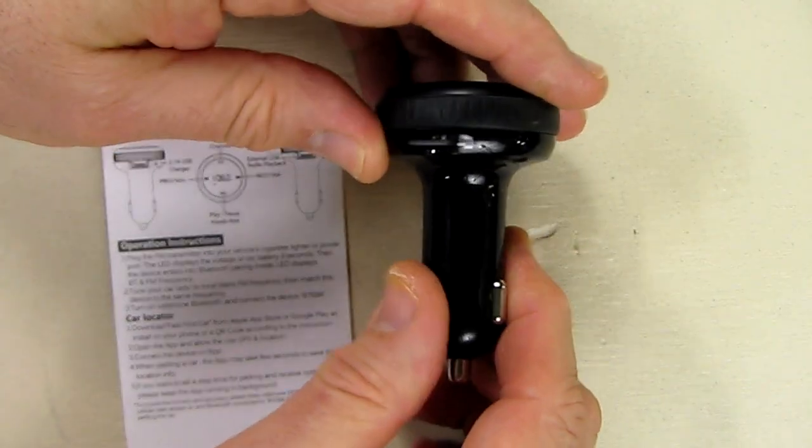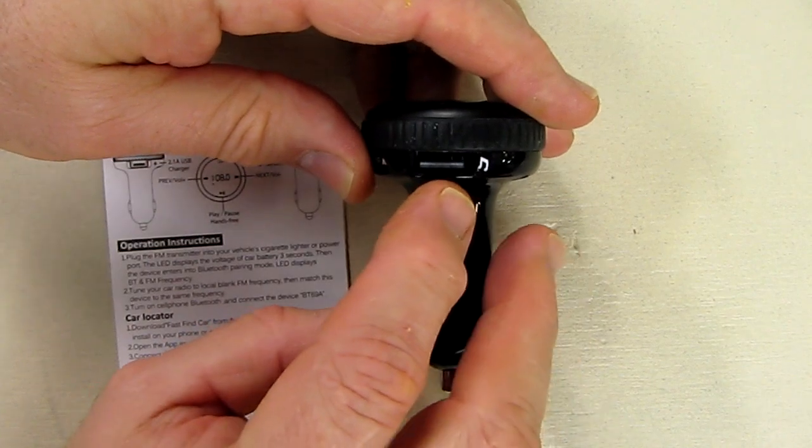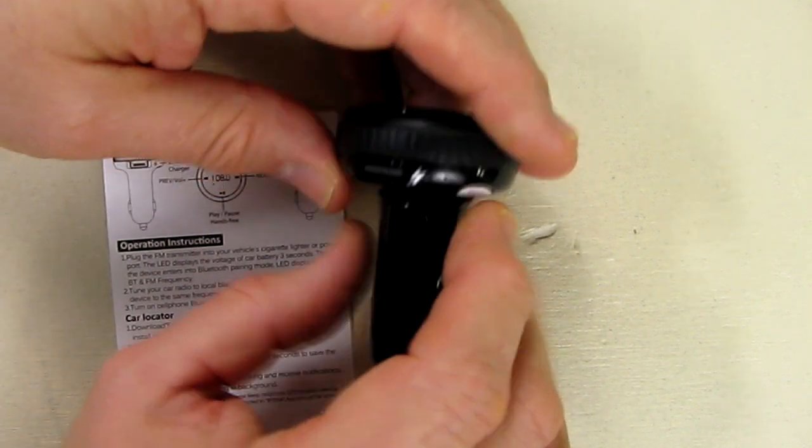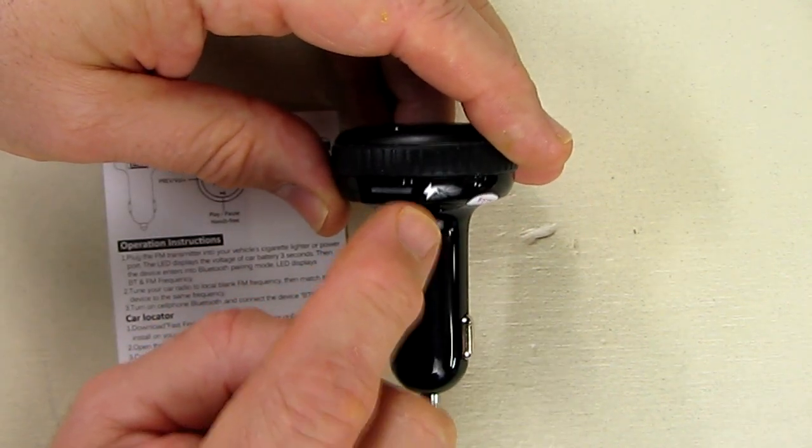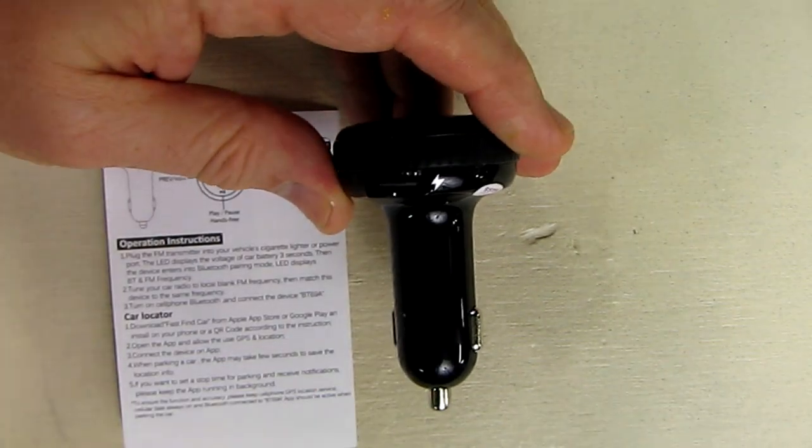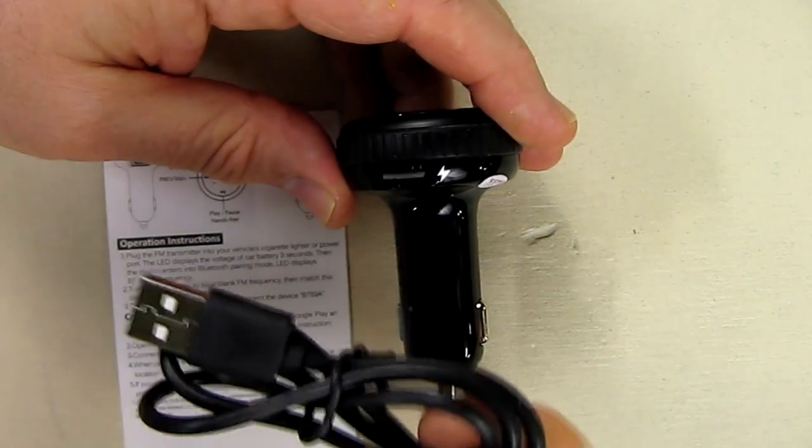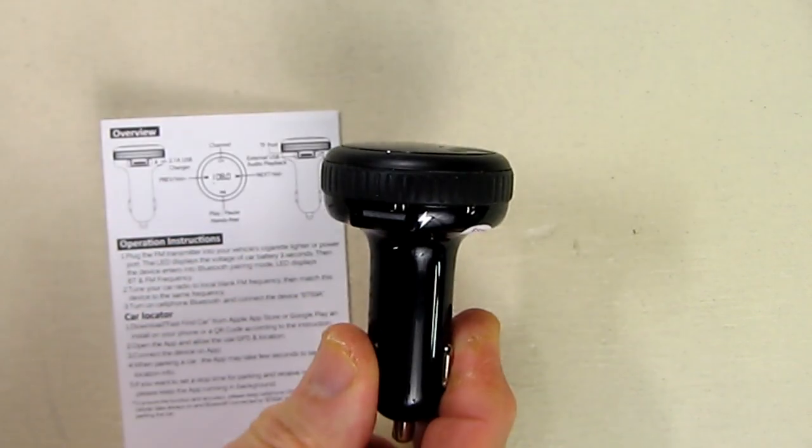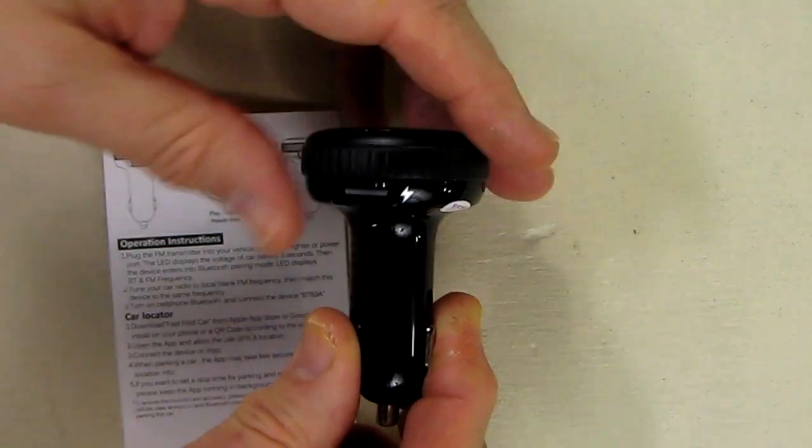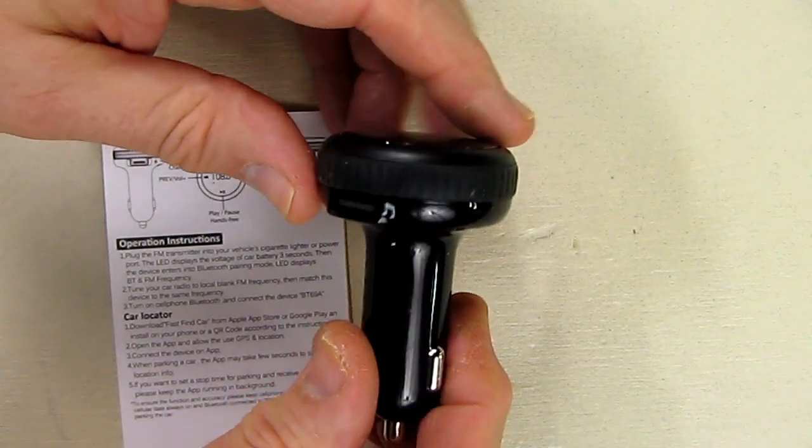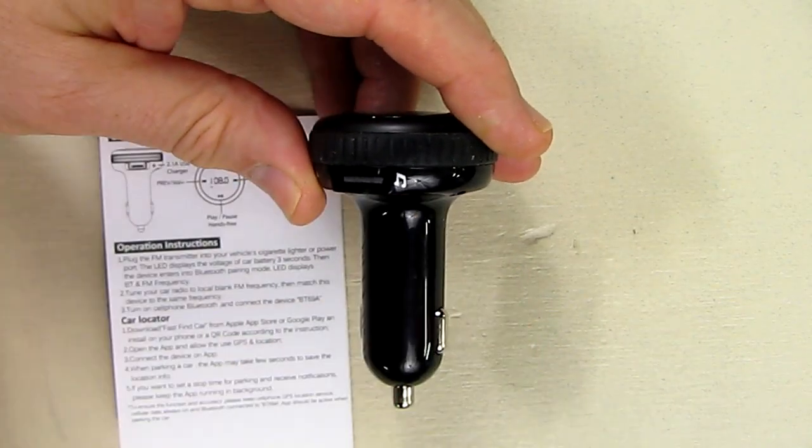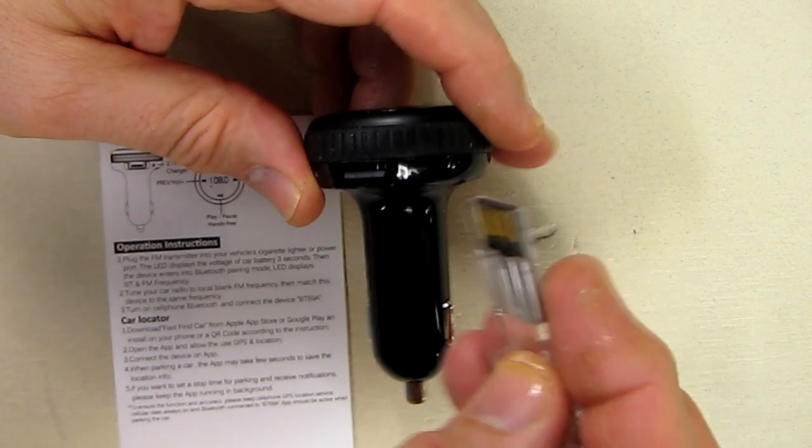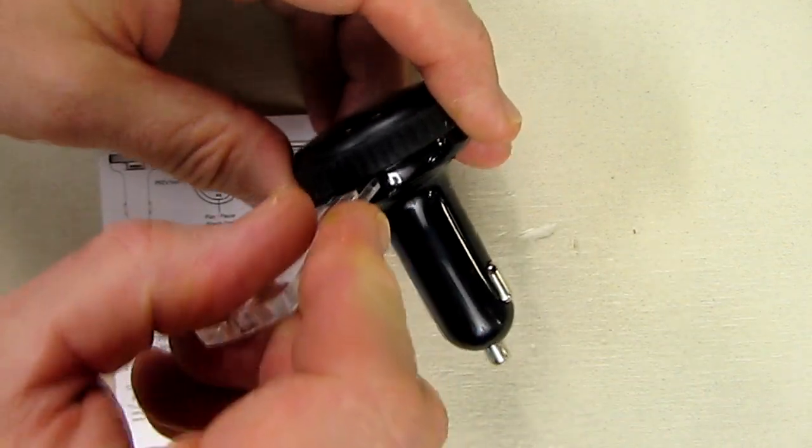On the side of the unit there are two USB ports and they look almost identical. One has a little charging symbol on there and that's where you would charge your cell phone by plugging in your cell phone cable. You have a nice USB based charger and it's 5 volts at 2.1 amps.